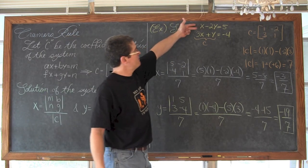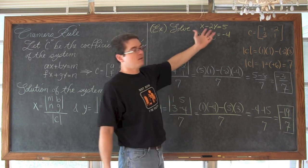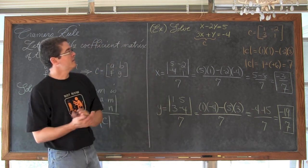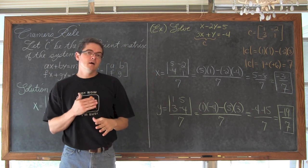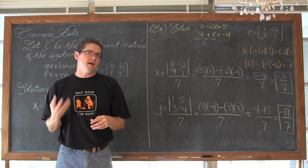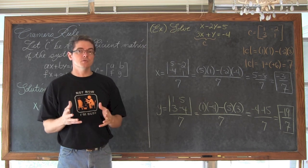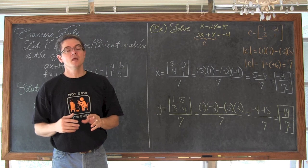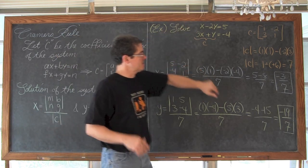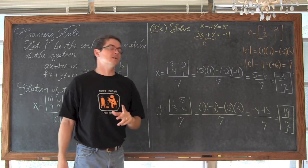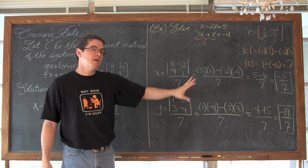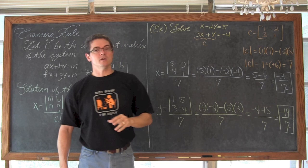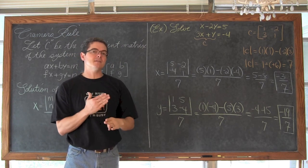Don't forget when we have x to the first and y to the first, we have a linear system here. So when we solve x minus 2y equals 5 and 3x plus y equals negative 4, we are finding out what values of x and y will make both equations true — where these lines intersect. These two lines intersect at the point negative 3 sevenths and negative 19 over 7. If you want to make sure those answers are right, you have to plug that value of x and y into both the first equation and the second equation.